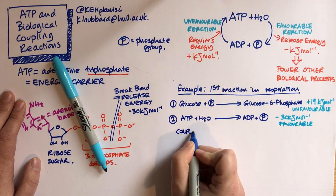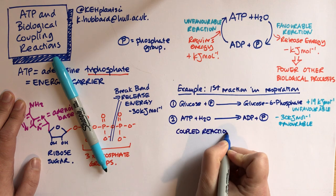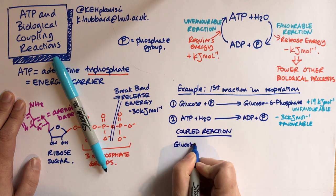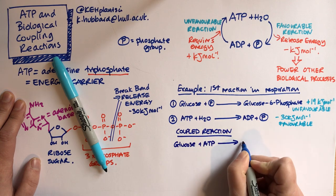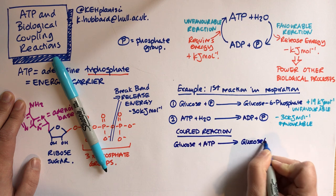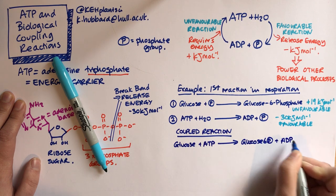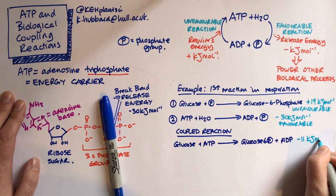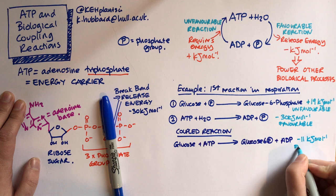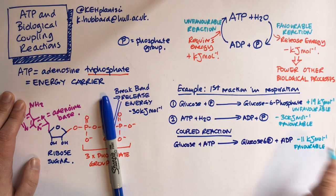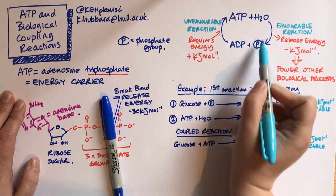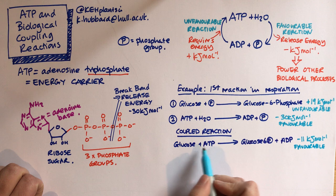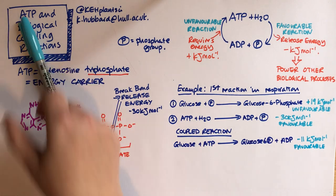So we can therefore have a coupled reaction where we combine the two. We can say we have glucose plus ATP goes to glucose 6-phosphate plus ADP. And that, if we do the maths on that, leaves us still with 11 kilojoules per mole of energy. So that's still favourable. We've used the energy released by this ATP hydrolysis reaction in order to power this glucose phosphorylation reaction. And you'll notice that we've actually used the phosphate from ATP and stuck it on the glucose.